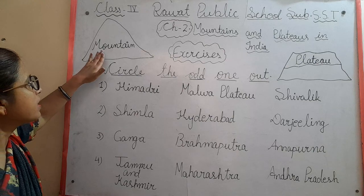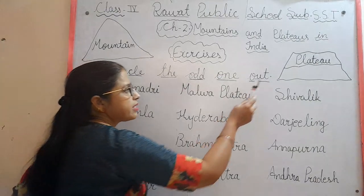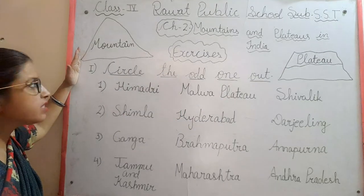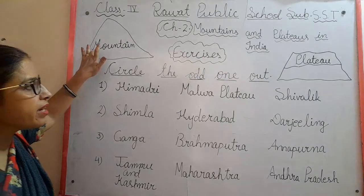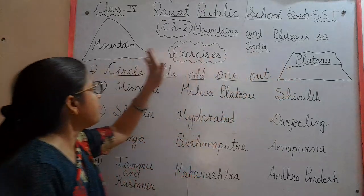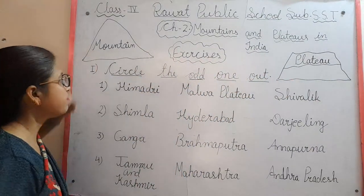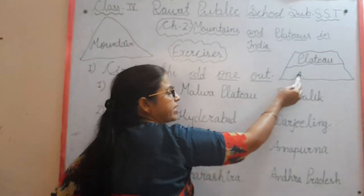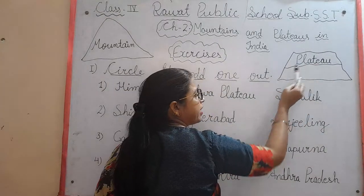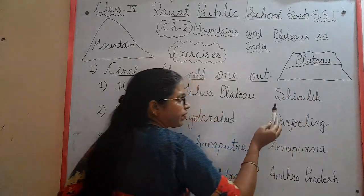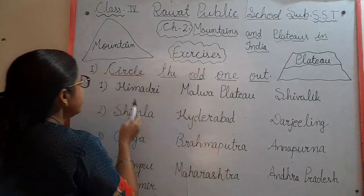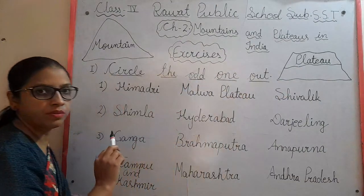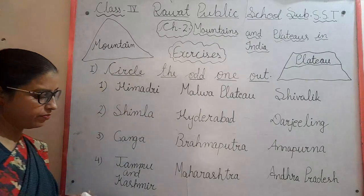This is a picture of a mountain and this is a picture of a plateau. You can see the difference between mountain and plateau. A mountain looks like this — pointed at the top. And a plateau looks like this — like a table. It is broad on top as well. So you can see here the difference between mountain and plateau.